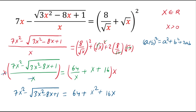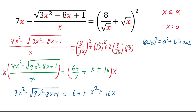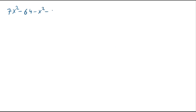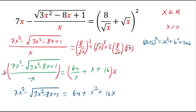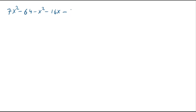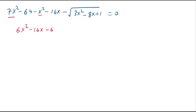Now if we take all expressions to the same side, on the left hand side: 7x squared minus 64 minus x squared minus 16x minus square root of 3 times x squared minus 8x plus 1, equals 0. This gives 6x squared minus 16x minus 64 minus square root of 3 times x squared minus 8x plus 1, equals 0.